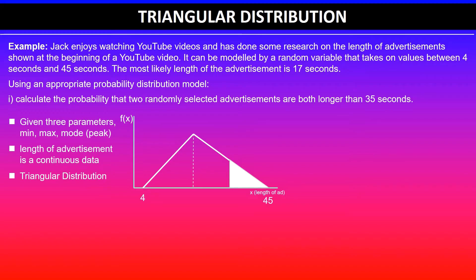The random variable x is the length of the advertisement, and f(x) is the probability density function. The minimum value is 4, the maximum was 45 seconds, the peak which is the most likely value was 17 seconds. The a value is 4, b is 45. It's good to label these so we can use the formula.